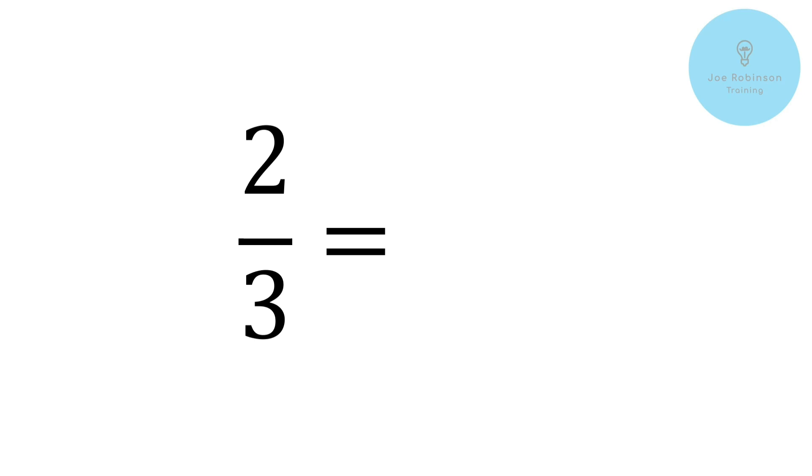But if we start to dissect fractions a little further, we can actually start to think of this top number as being a multiplier. So we've got something, as you can see here, divided into three parts, but then we're interested in two of those parts. So it kind of is like we're dividing by the bottom number but multiplying by the top number.